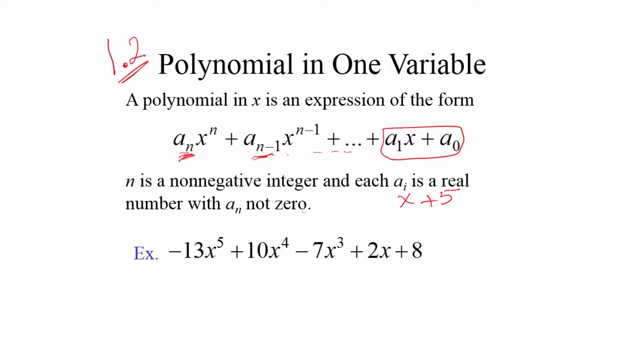Another example: -13X^5 + 10X^4 - 7X^3 + 2X + 8. This is a polynomial of the fifth degree — the highest power determines the degree. You don't have to have every descending power present; for instance, 2X^5 + 2 is also a polynomial of the fifth degree.